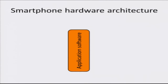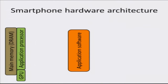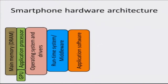We will start the hardware architecture description with the application software, because this is what actually executes on the smartphone. The software gets executed with the help of an application processor, often taking help from a graphics processor for rendering scenes. Whenever the application processor or the graphics processor needs data, it will access the main memory, which is dynamic random access memory. Between the application software and the application processor there are two elements: the operating system and the drivers necessary for handling various types of IO calls, and a runtime system or middle layer which the application software uses to execute various types of application programs.